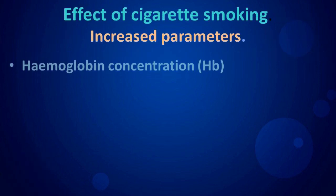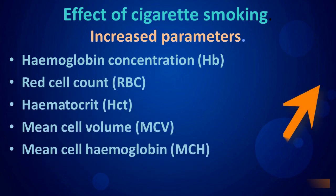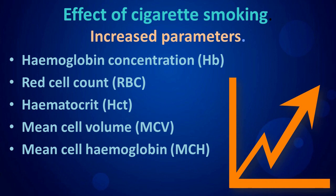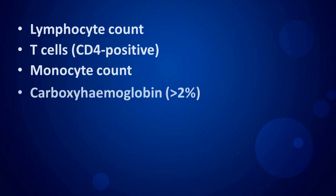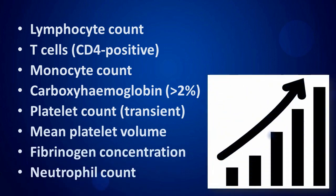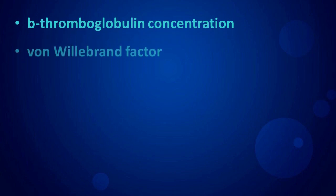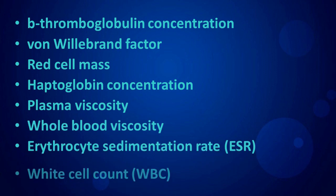The parameters increased by cigarette smoking include: hemoglobin concentration (Hb), red cell count (RBC), hematocrit (Hct), mean cell volume (MCV), mean cell hemoglobin (MCH), lymphocyte count, T-cells (CD4 positive), monocyte count, carboxyhemoglobin, platelet count, mean platelet volume, fibrinogen concentration, neutrophil count, beta-thromboglobulin concentration, von Willebrand factor, red cell mass, haptoglobin concentration, and plasma viscosity.